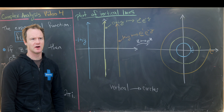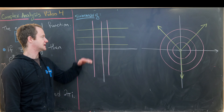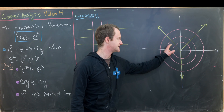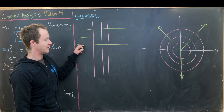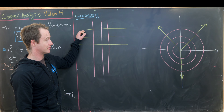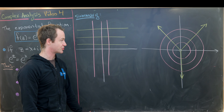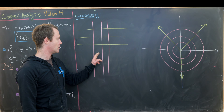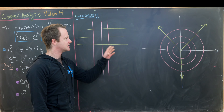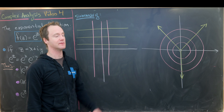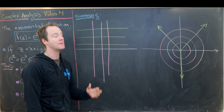As a quick summary: horizontal lines turn into rays from the origin — so a line at π/4 gives the ray at angle π/4, a line at 3π/4 gives that ray, and so on. Vertical lines are mapped to circles — the lines at x equals negative 1, 0, and 1 give circles of radius 1/e, 1, and e respectively. This is an important picture to remember, especially when we move to inverting it — in other words, looking at the logarithm function.